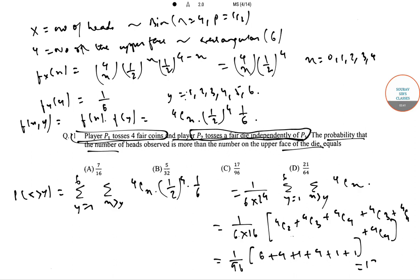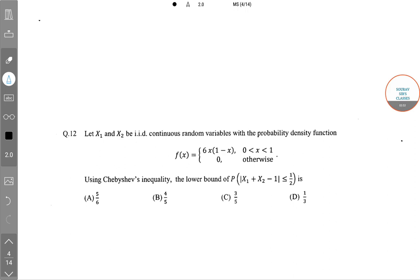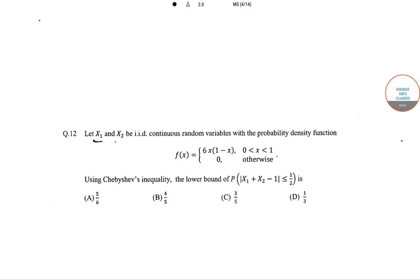This equals 17/96, so the correct option is option C. The next question: Let X1 and X2 be IID continuous random variables with probability density function f(x) = 6x(1−x) for 0 < x < 1, and 0 otherwise.